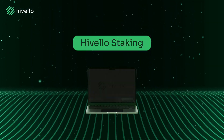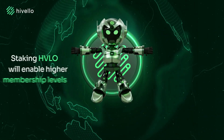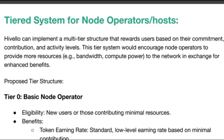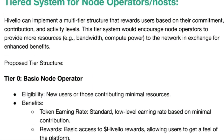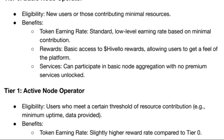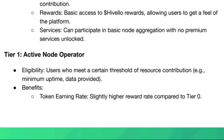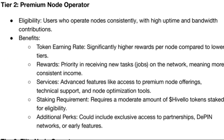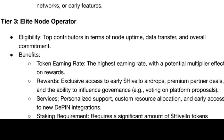The earnings structure is divided into tiers based on how much computing power you share and whether you stake HVLO tokens. There are four tiers: Basic — just run the app and get standard rewards; Active — higher rewards for better uptime and staking small amounts of HVLO tokens; Premium — significantly higher payouts for staking more HVLO tokens and providing better resources; and Elite — the highest earnings, exclusive bonuses, and governance voting.